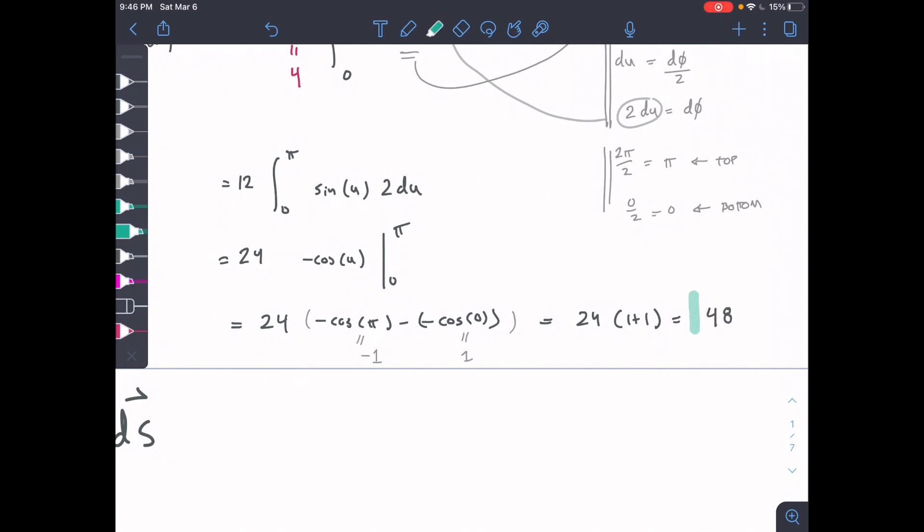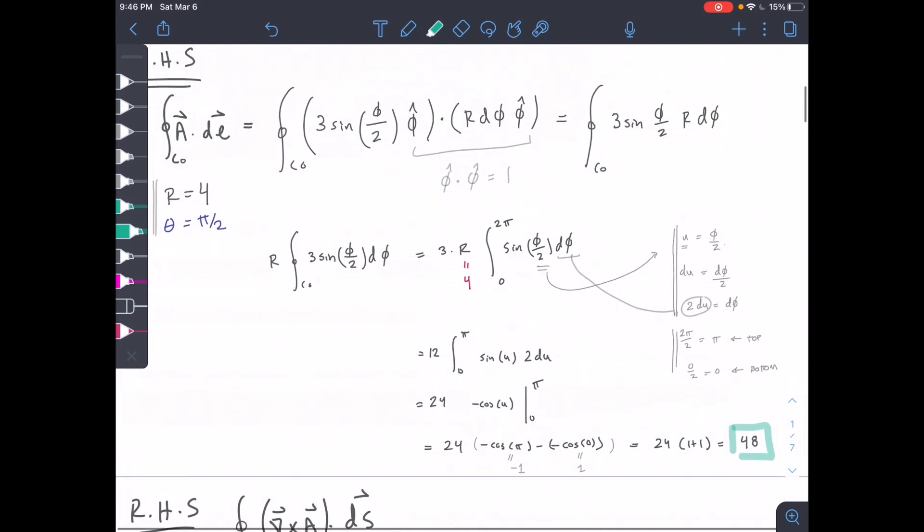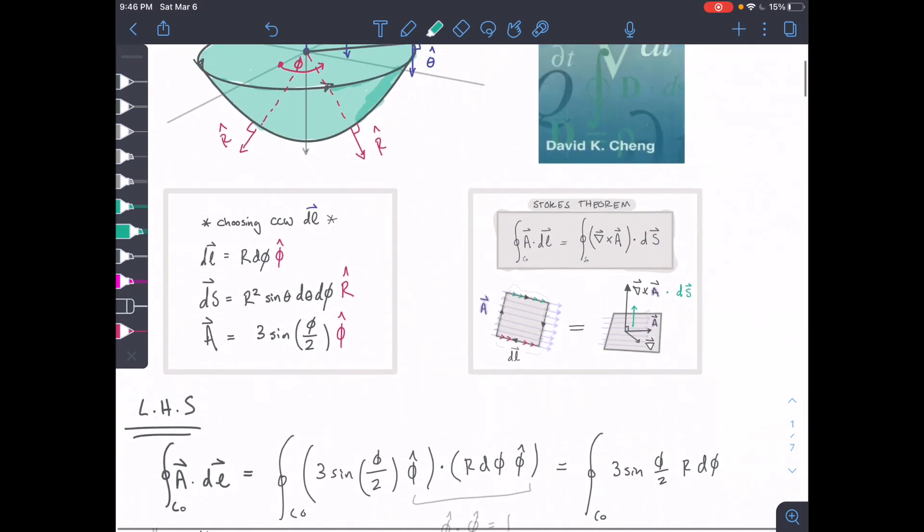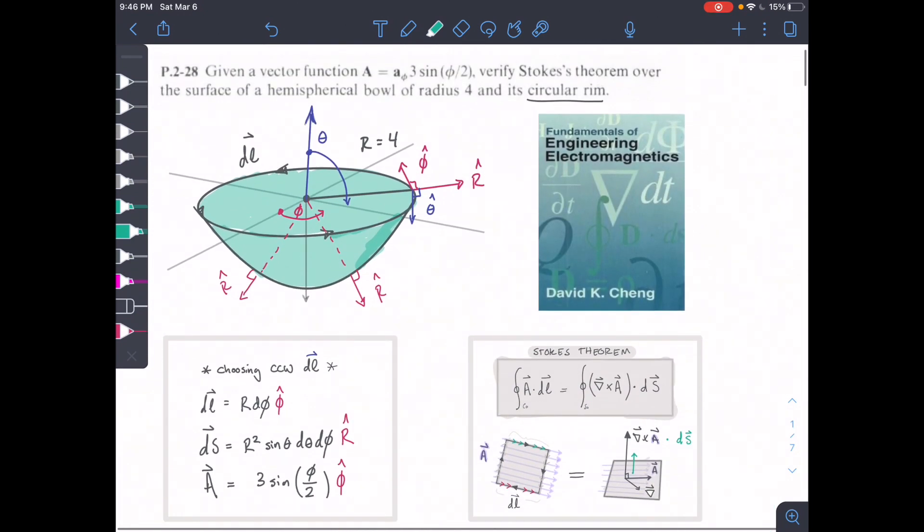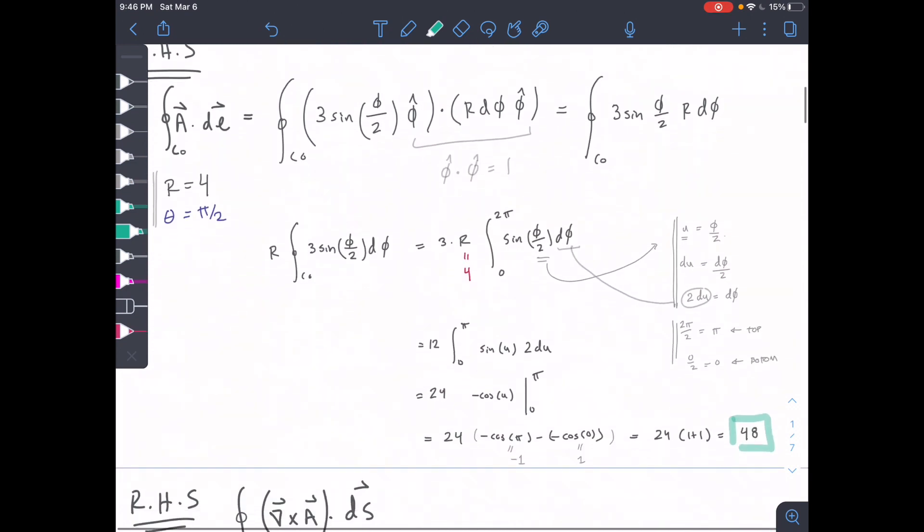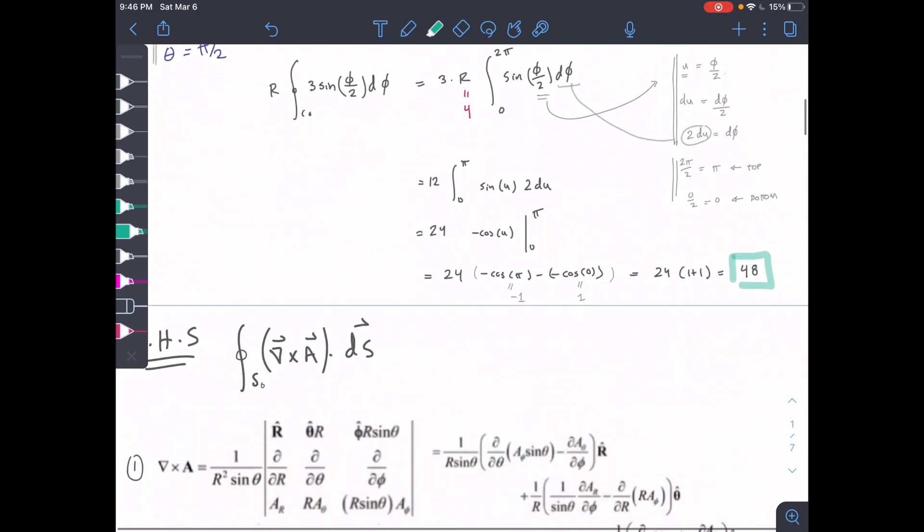That's our top part here. We did part 1 - we found this A dot DL. I'm going to break this up and stop this video here. For the second part of this video, we're going to find our right-hand side, the curl dot DS.